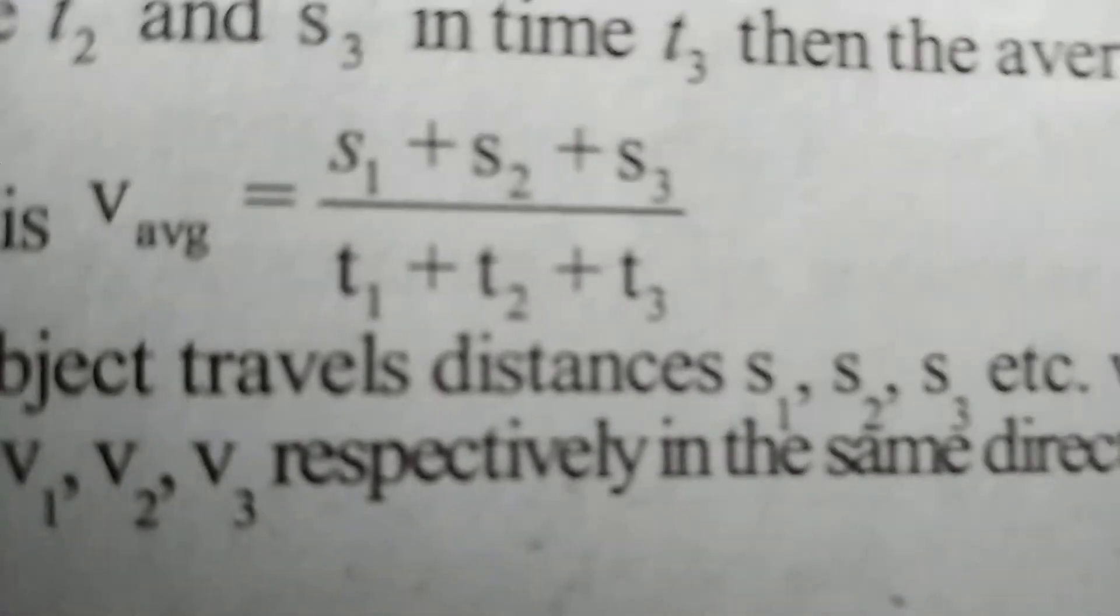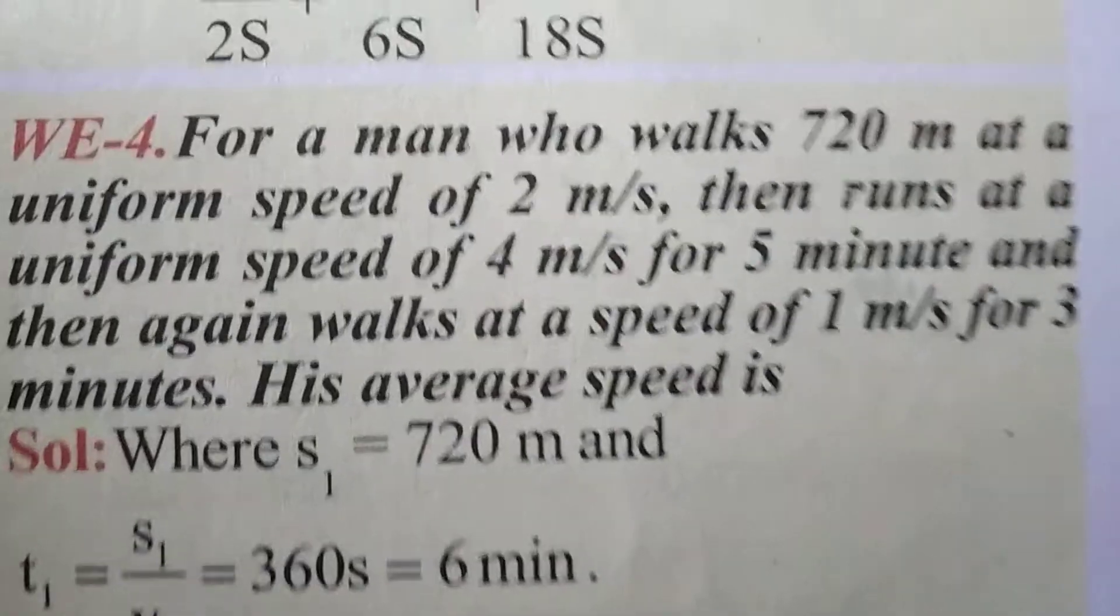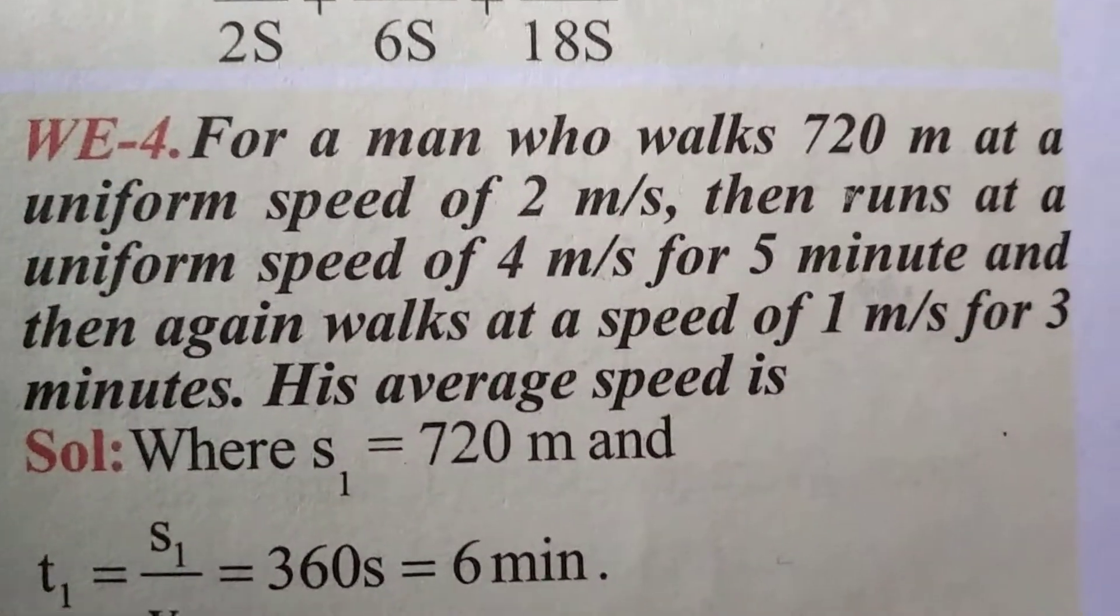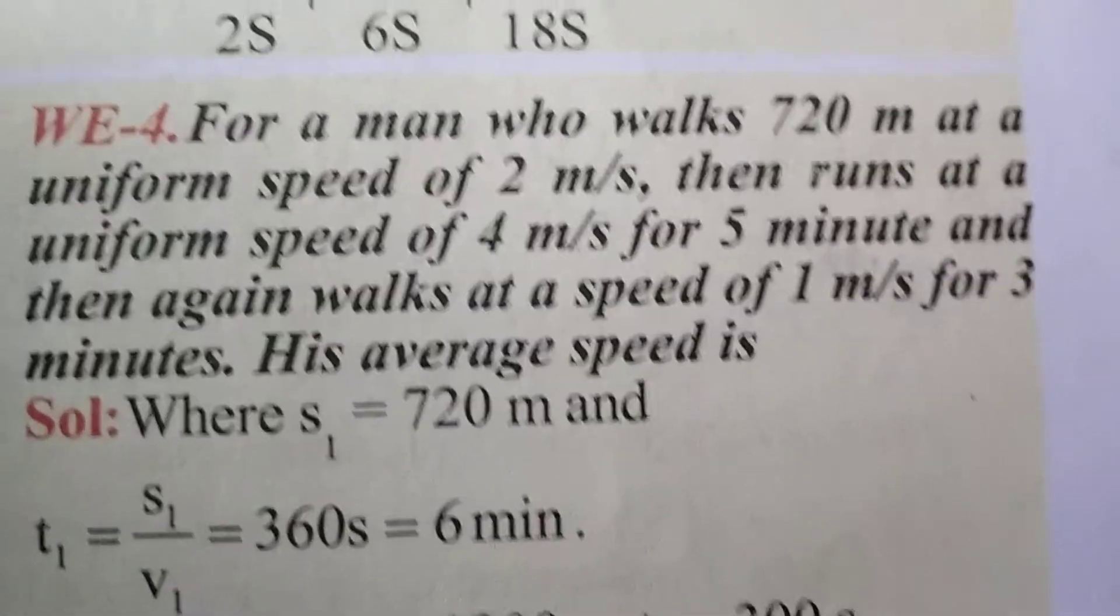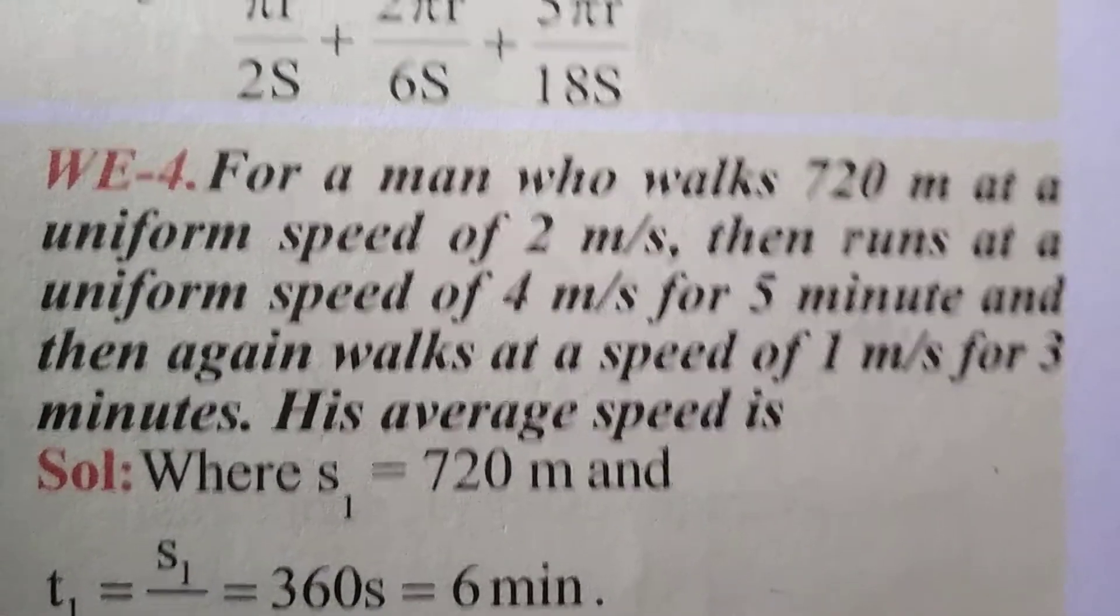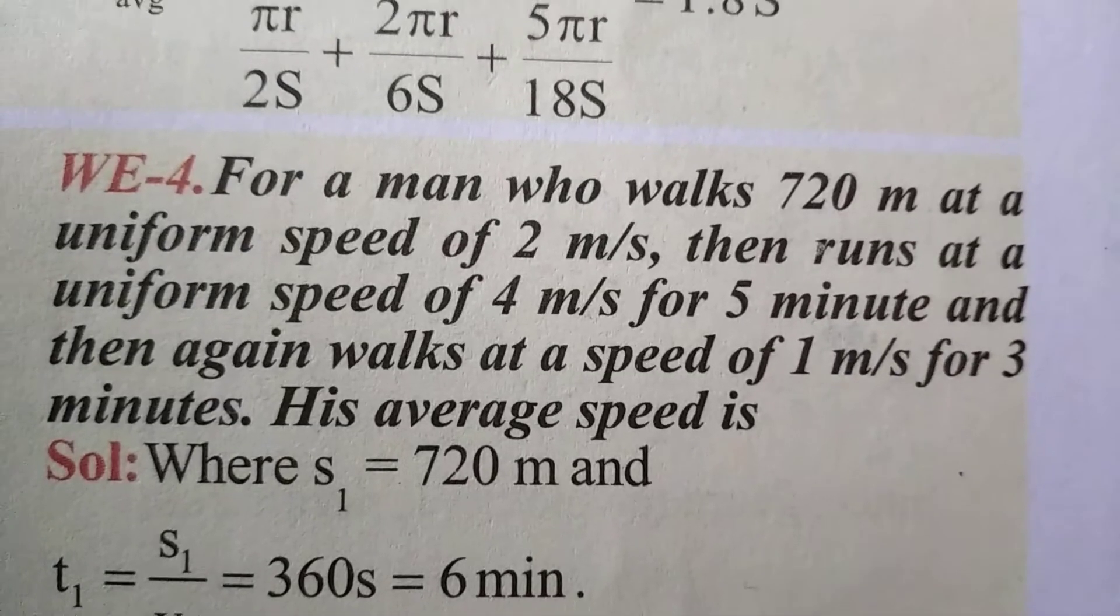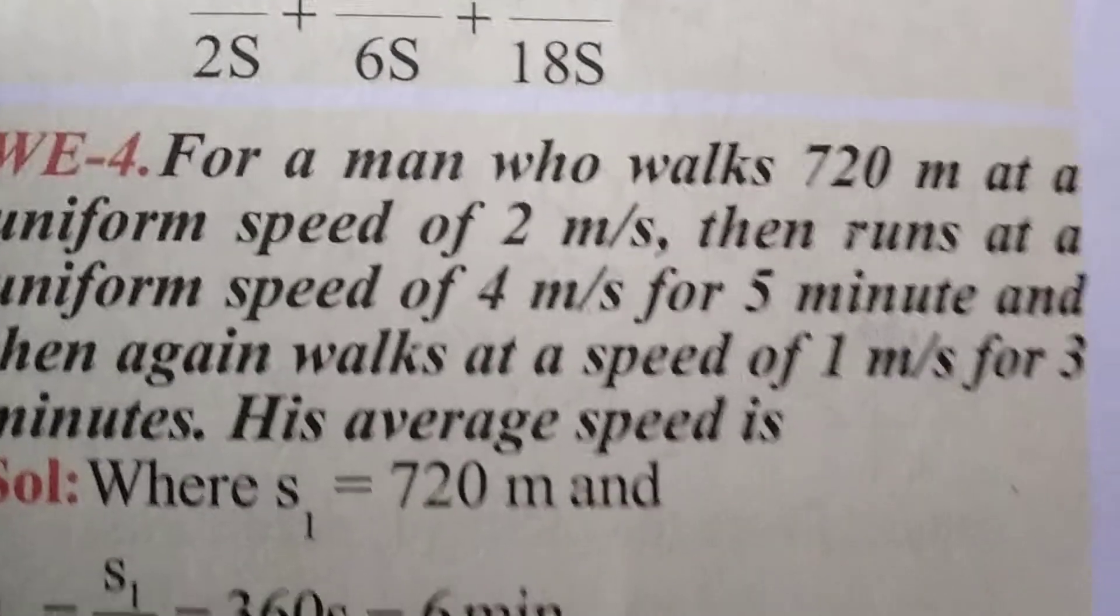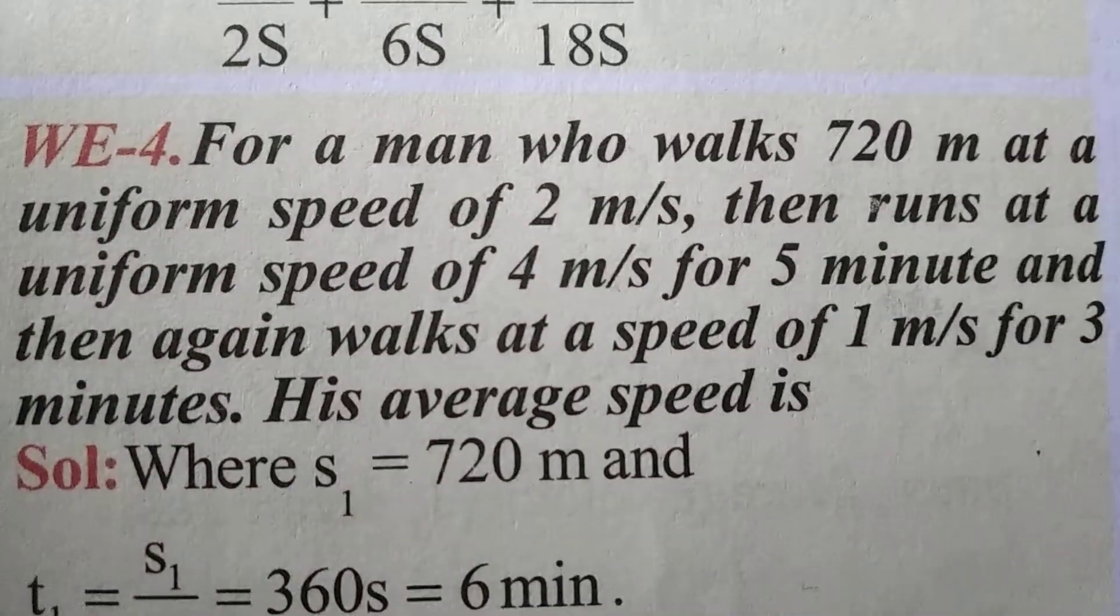Now let's go back to the problem. For a man who walks 720 meters at a uniform speed of 2 meters per second, then runs at a uniform speed of 4 meters per second for 5 minutes, and then walks at a speed of 1 meter per second for 3 minutes, his average speed is what we need to find. Let's go to the problem.